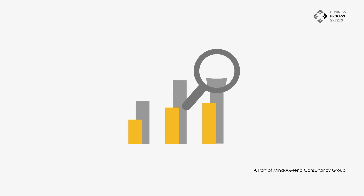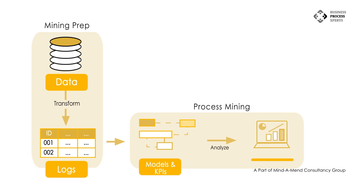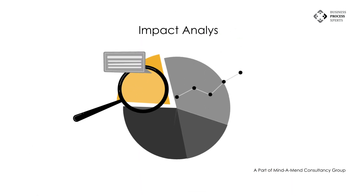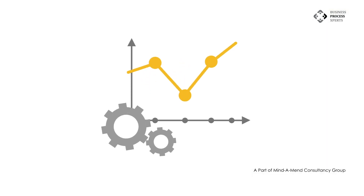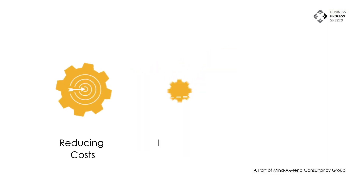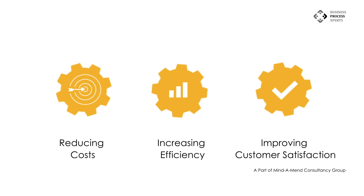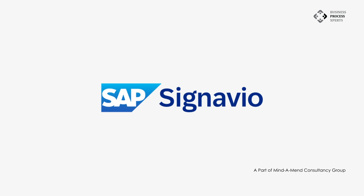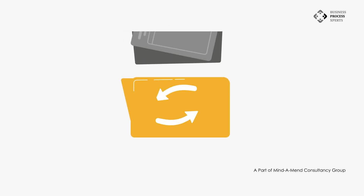Number two: analyzing business processes. SAP Signavio can be used to analyze business processes to identify areas for improvement. This can be done by using features such as process mining, simulation, and impact analysis. This helps you identify areas where you can improve your processes, such as by reducing costs, increasing efficiency, or improving customer satisfaction.